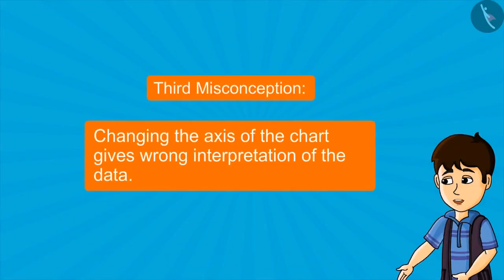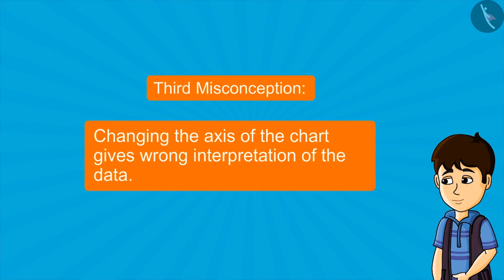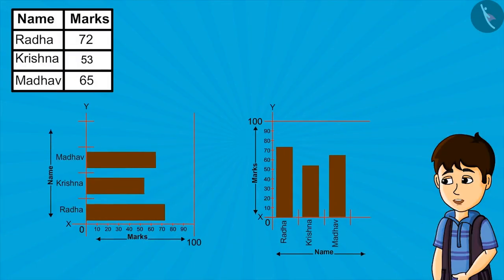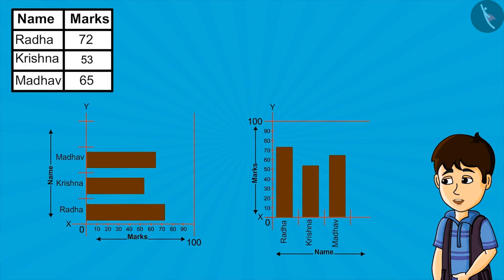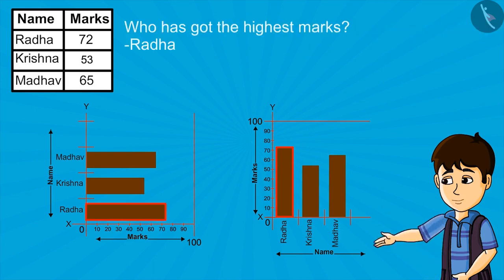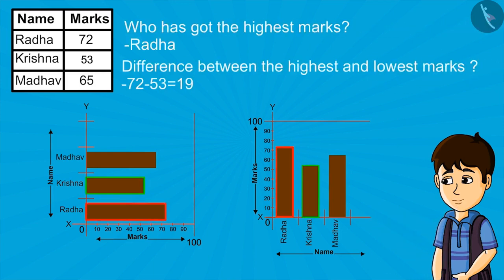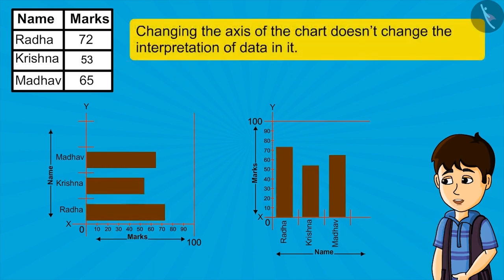Some people also believe that changing the axis of the chart gives wrong interpretation of data. We have only changed the coordinate axis, but still we are getting the same information from the data — who has got the highest marks, the difference between the highest and lowest marks, etc. So we can say that changing the axis of the chart doesn't change the interpretation of data in it.